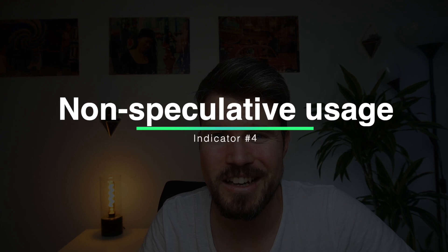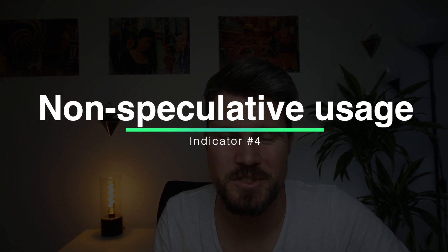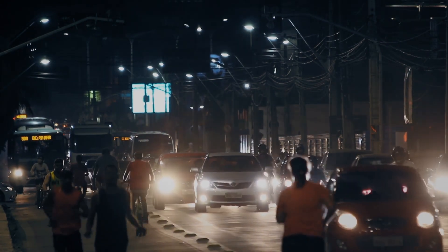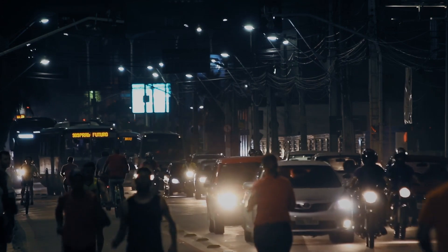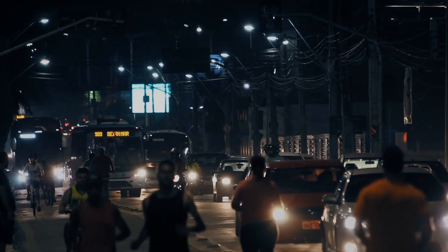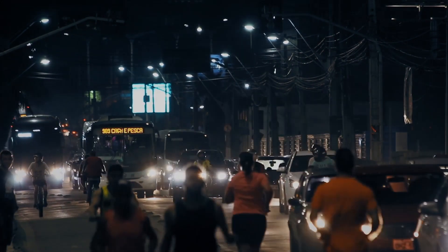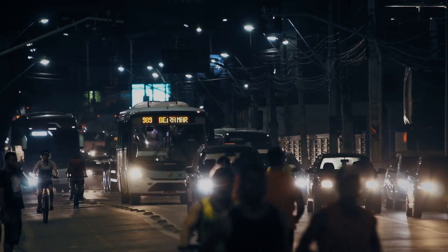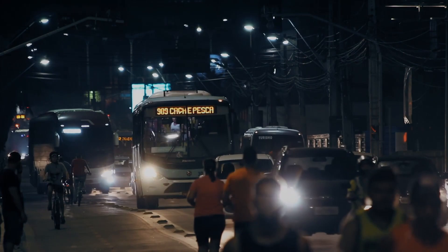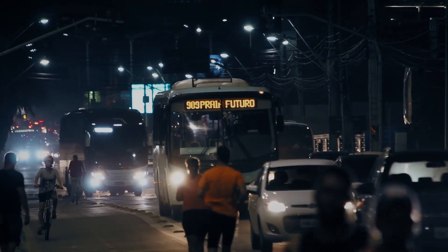Indicator number four is the non-speculative usage aspect of a certain DeFi asset. Understanding what kind of use cases a DeFi asset actually brings to the community is super critical in figuring out what the true value is, not just the speculative value. If you just want to make a quick buck, many assets often go 5x or 10x without actually having a use case behind them. In my opinion, an asset just being a governance token is not a very good use case.